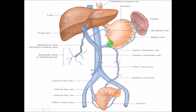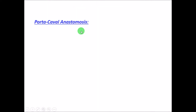Here you can see the superior mesenteric vein, the splenic vein, the inferior mesenteric vein, the left gastric, the right gastric, the para-umbilical veins, and the cystic vein, which has not been shown in this diagram.